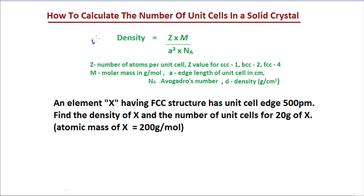This is the density formula: density is equal to Z times M divided by A³ times N, where Z is the number of atoms per unit cell, M is the molar mass in grams per mole, A is the length of the unit cell measured in centimeters, and N is Avogadro's number. D is density measured in grams per centimeter cubed.